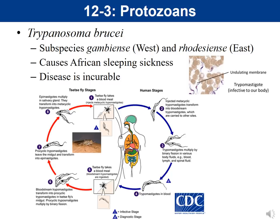In this lecture we're going to talk about protozoans. The first protozoan is Trypanosoma brucei, which has two subspecies: subspecies Gambiensi, found in West Africa, and Rhodesiense, found in East Africa. You don't have to know those for the practical, but the reason I wanted to point them out is because when we talk about symptoms, we'll discuss how West African sleeping sickness varies from East African sleeping sickness.